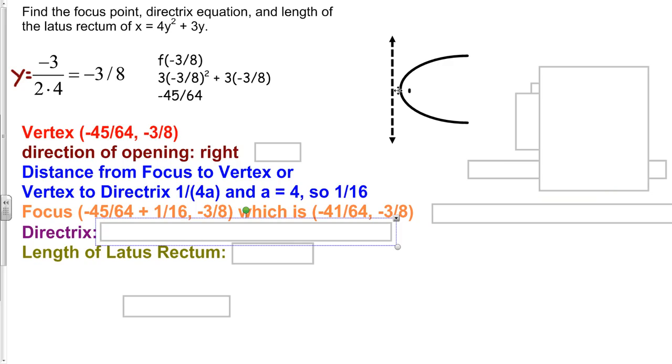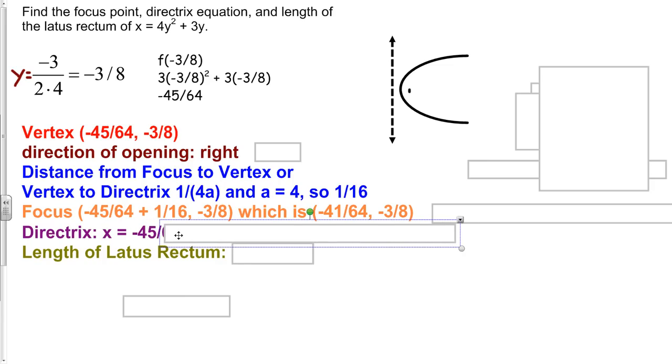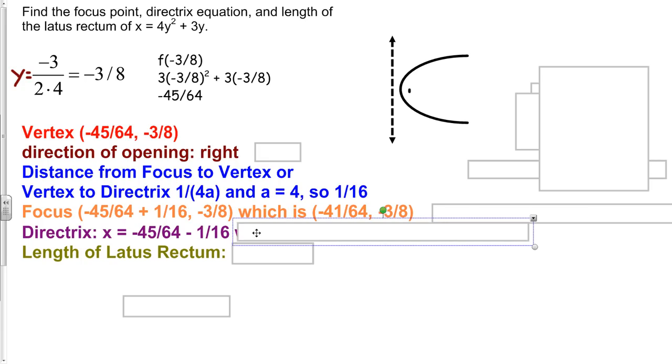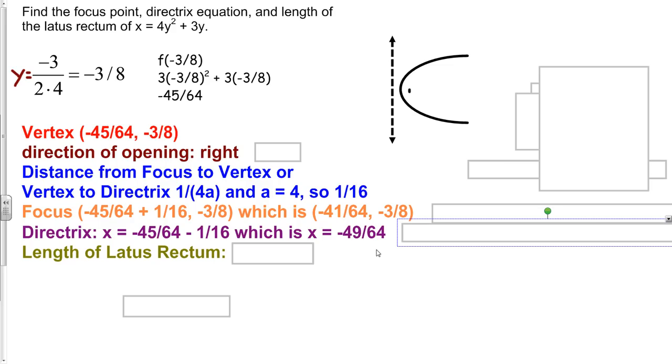Our directrix here is on the left. So if we want to figure out what x value this line is at, we need to shift our vertex to the left, 1/16. That's the distance between our vertex, the center here, and our directrix line. So we're going to do almost the same thing we did with the focus, except go the other direction. So x equals negative 45/64 minus 1/16. And that's going to simplify to x equals negative 49/64.